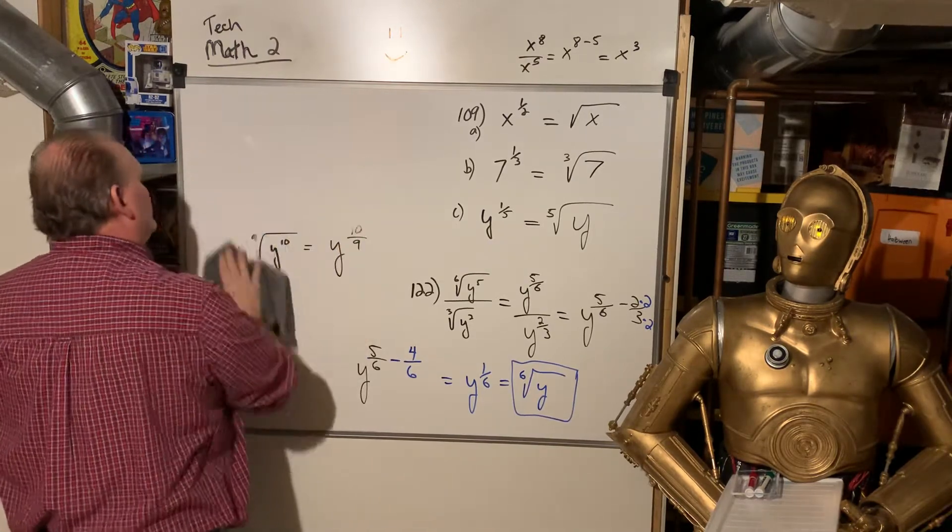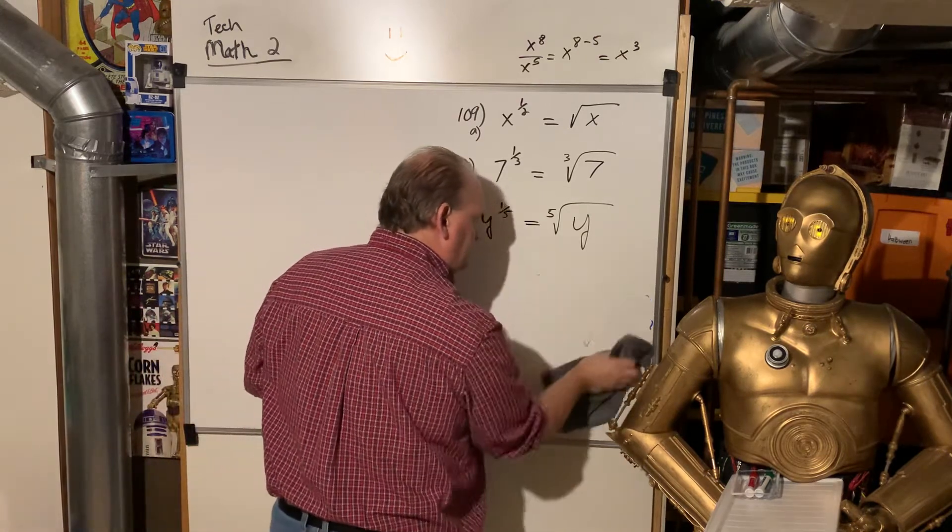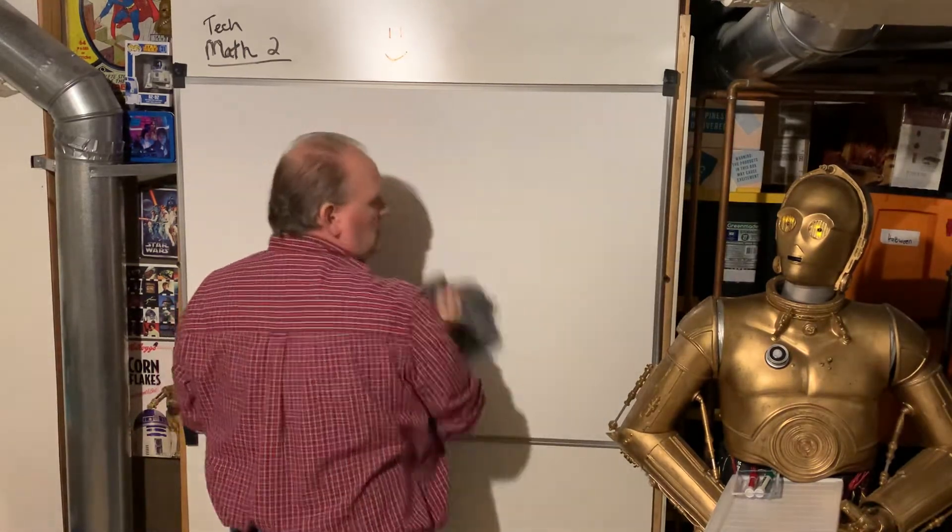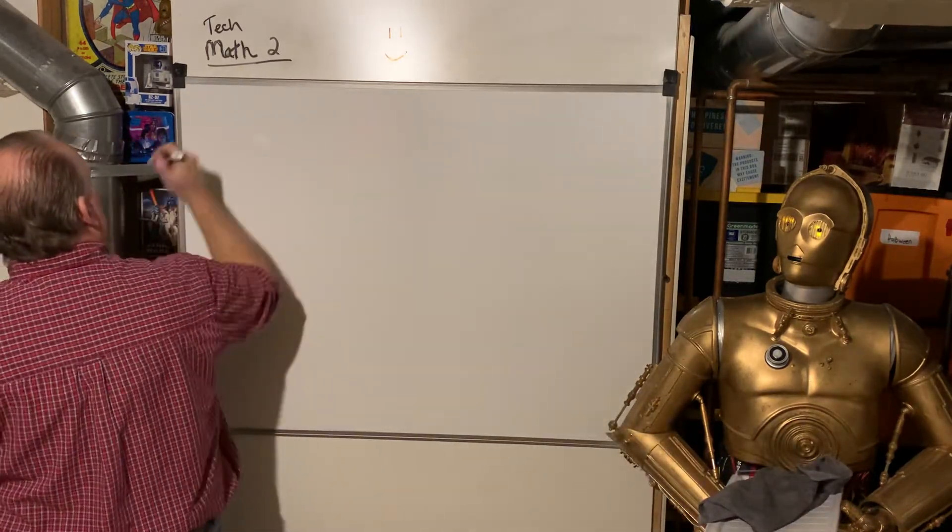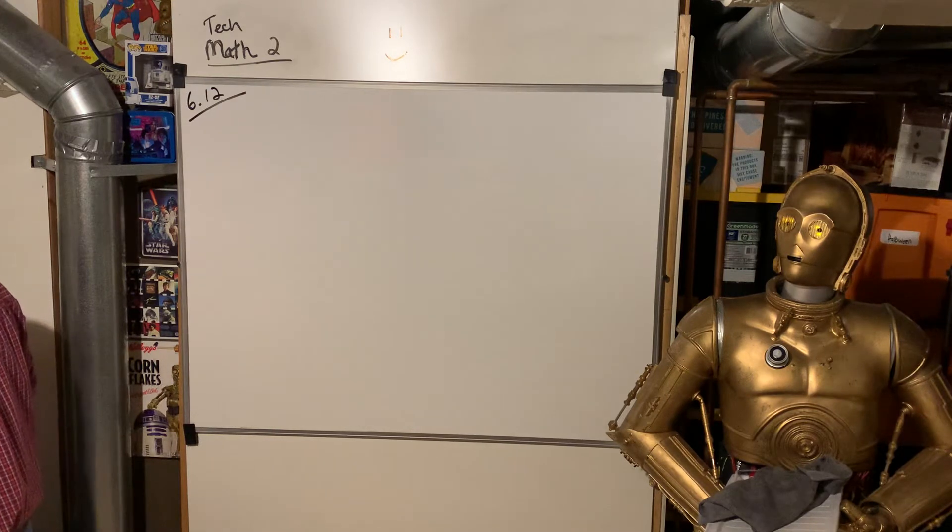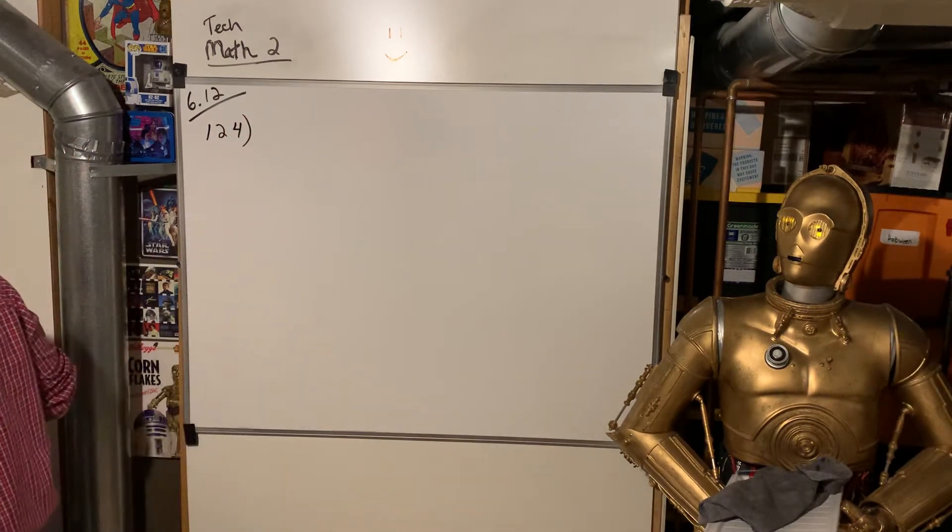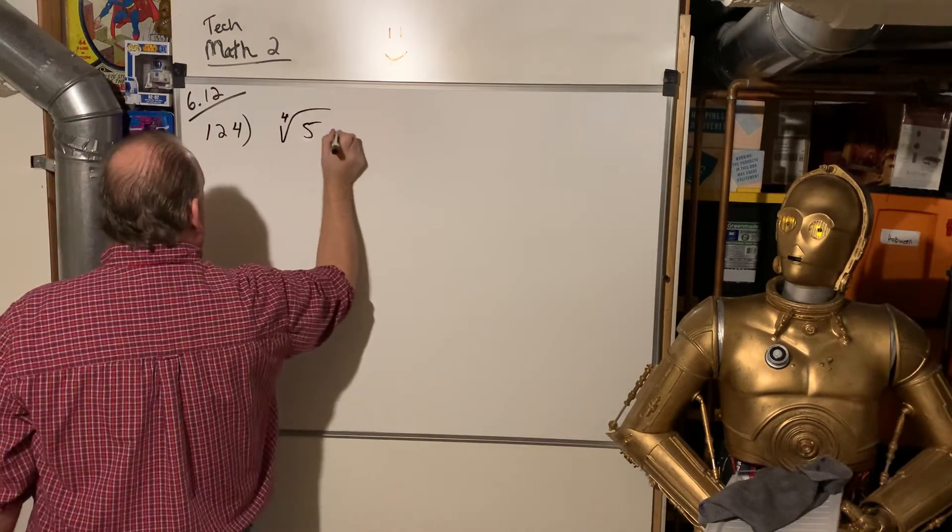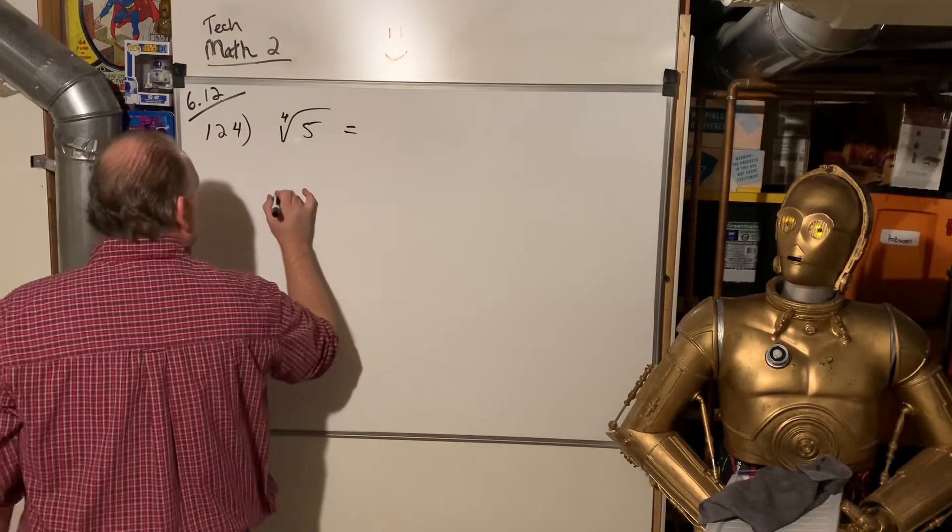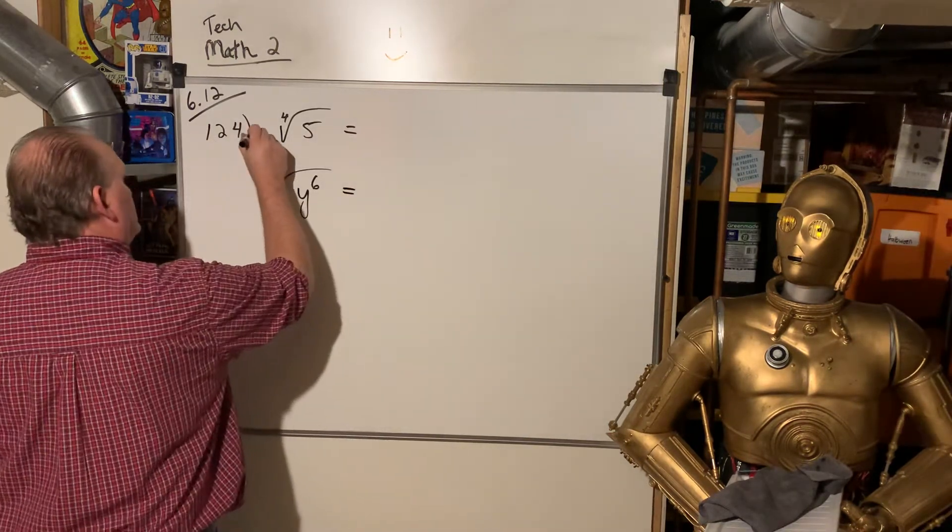That's just putting them into decimal form, I think, which makes it easier to evaluate in your calculator. Just to type in a decimal for a power, for an exponent. So I'll look at 612. And that is, let's see, the fourth root. We're looking at 124 on page 290. So the fourth root of 5 and the fifth root of y to the sixth.